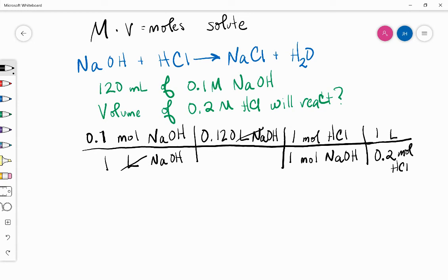So now, we solve that problem: 0.1 times 0.120 times 1 times 1 divided by 1 times 1 times 0.2. That's going to give us a final answer, 0.60 liters of HCl.